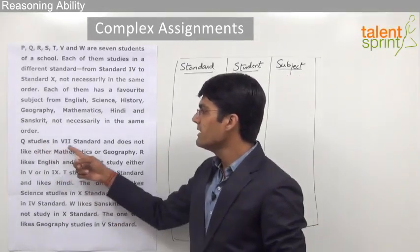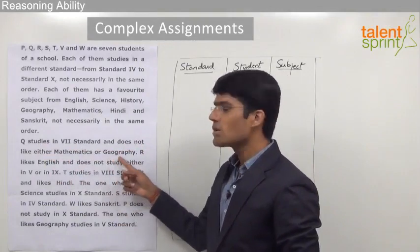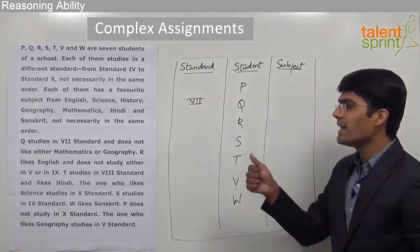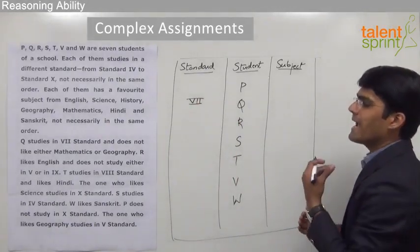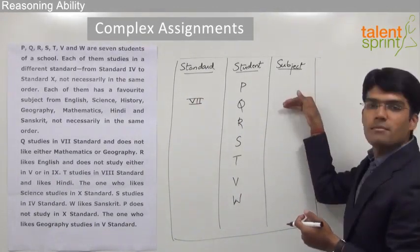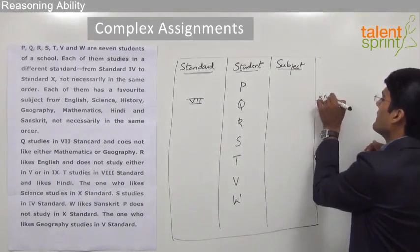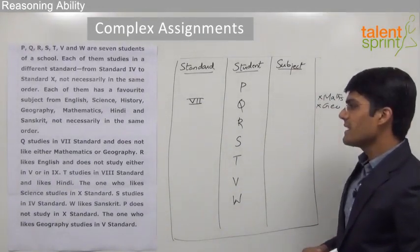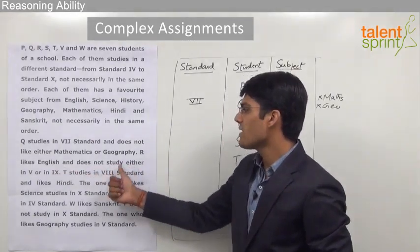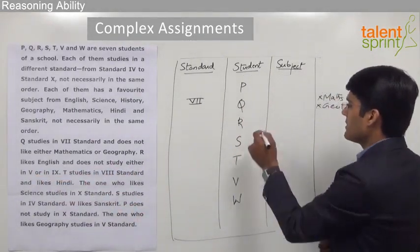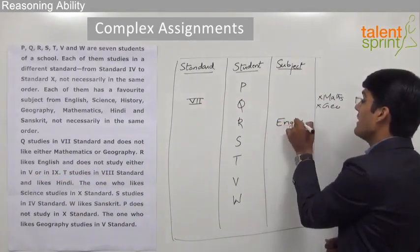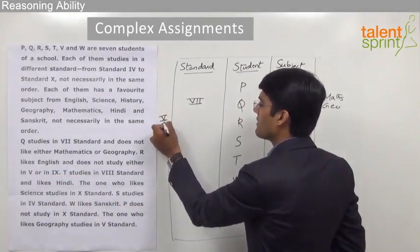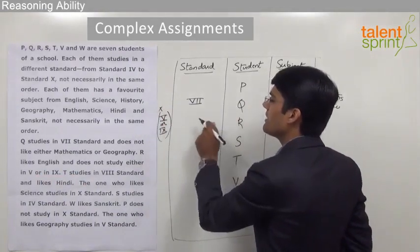The first statement is: Q studies in 7th standard and does not like either mathematics or geography. So student Q studies in 7th standard and does not like either mathematics or geography. Whenever we know that a particular parameter cannot be occupied in some given place, let us write it outside the table. Therefore math and geography cannot be the favorite subject for Q. The next statement is: R likes English and does not study either in 5th or in 9th standard, so 5th and 9th cannot be R's standard.